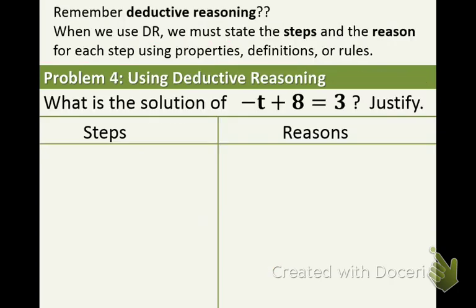Can you recall, we learned deductive reasoning in chapter 1. When we use deductive reasoning, we must state the steps that are involved and the reason behind each step. And we would do that by using properties, definitions, and rules. So let's take a look at our last example.